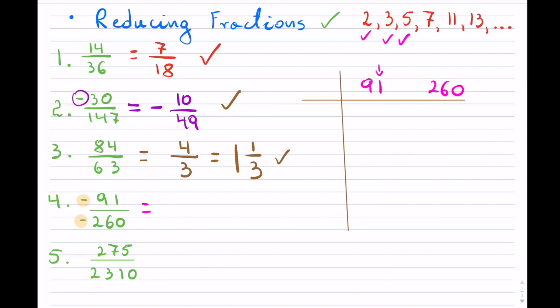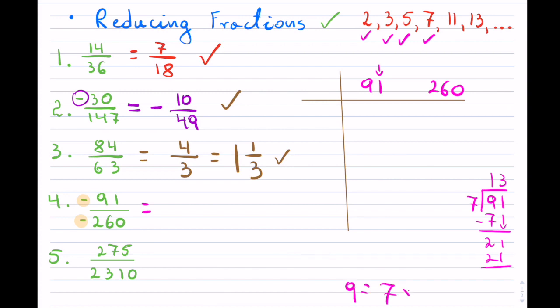What about 7? I check directly: 7 into 91 — 7 into 9 goes once, subtract to get 2, bring down the 1 to get 21, which goes 3 times. So 7 does go into 91 thirteen times — meaning 91 equals 7 times 13. I keep this on the side so I can see which prime factors are available.